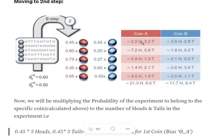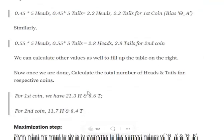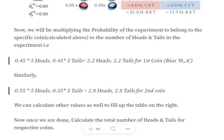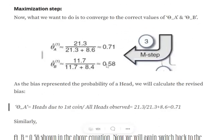We run this process for all five experiments and sum everything up. After summation we get: coin A — 21.3 expected heads and 18.6 expected tails; coin B — 11.7 expected heads and 8.4 expected tails. Then, as in the maximization step, we normalize: theta_a = 21.3 / (21.3 + 18.6) ≈ 0.71, and theta_b = 11.7 / (11.7 + 8.4) ≈ 0.58.